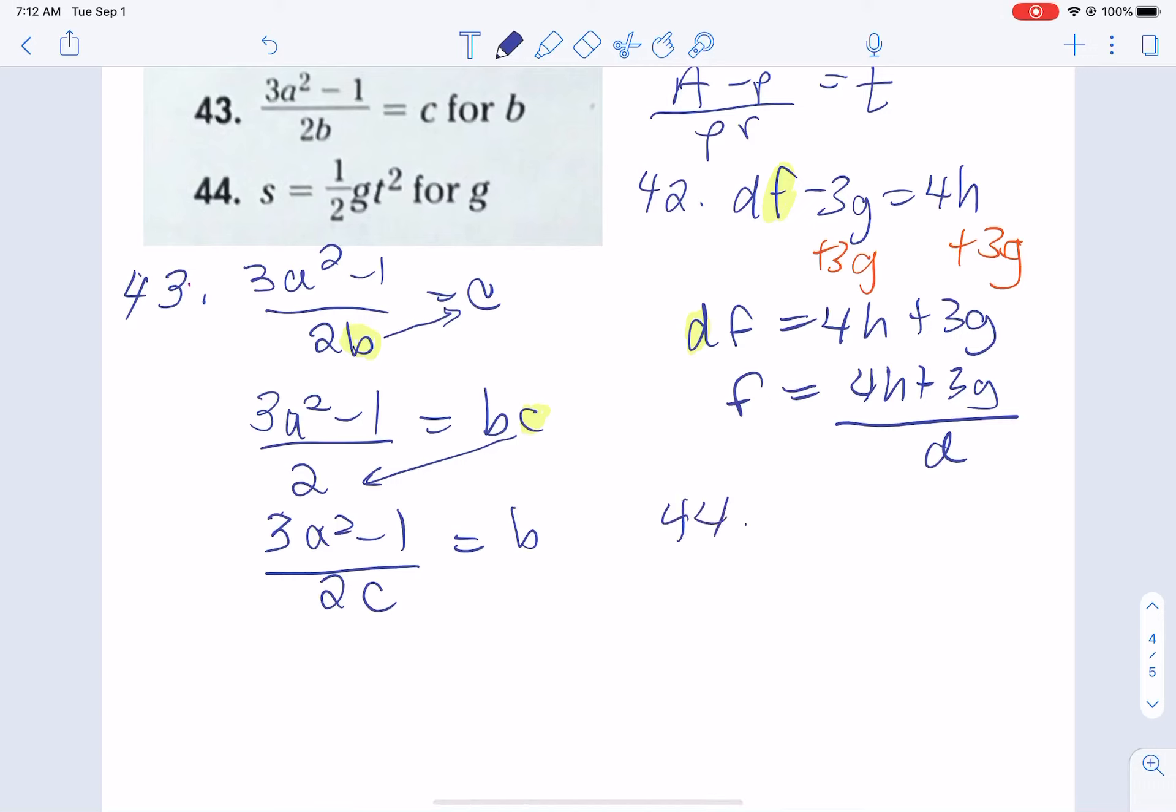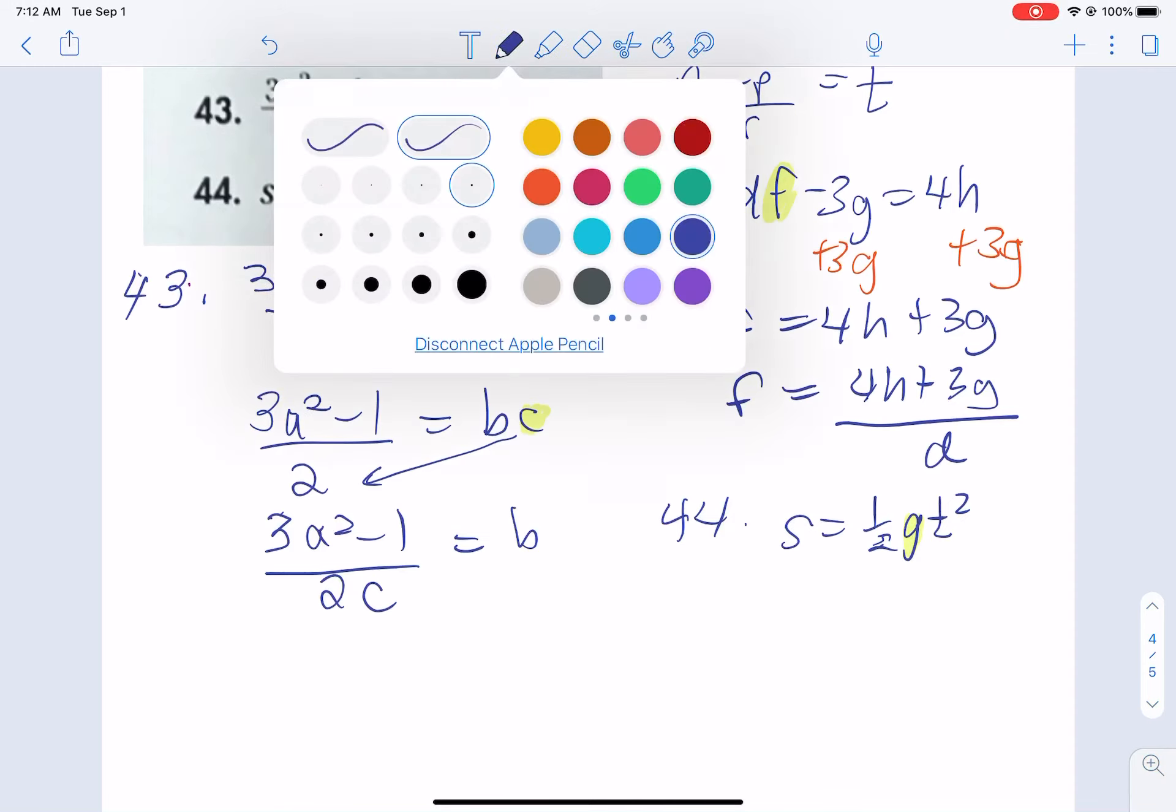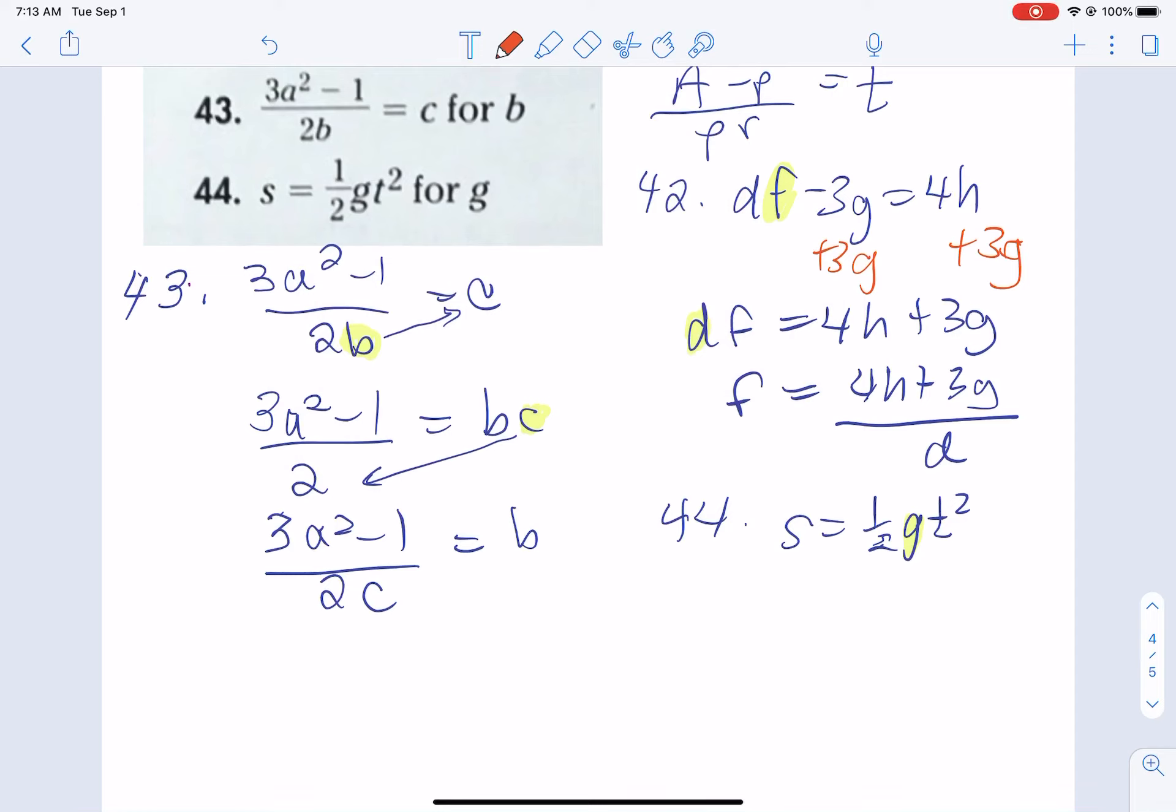We are solving this for G. Now, the easiest way I think to get rid of 1 half is to multiply both sides by the reciprocal of 1 half. So what is the reciprocal or the flip of 1 half? That would be 2 over 1 or 2.